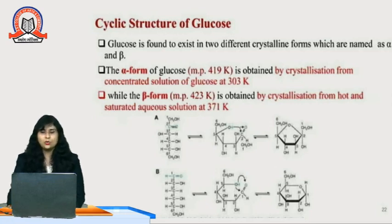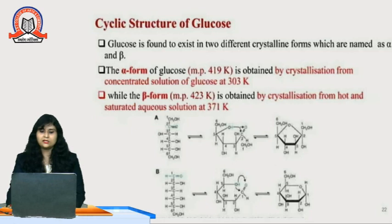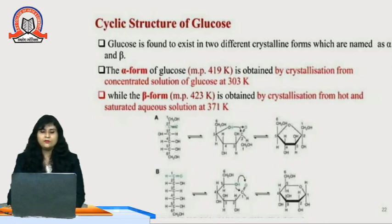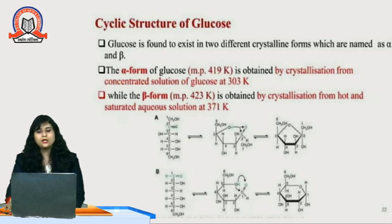Now, the cyclic structure of glucose. Glucose also exists in cyclic or closed chain structure. It is found to exist in two different crystalline forms: alpha and beta. The alpha form of glucose is obtained by crystallization from a concentrated solution of glucose at 303 Kelvin, while the beta form is obtained by crystallization from a hot saturated aqueous solution at 371 Kelvin. You can see the ring structures of both alpha and beta glucose here.